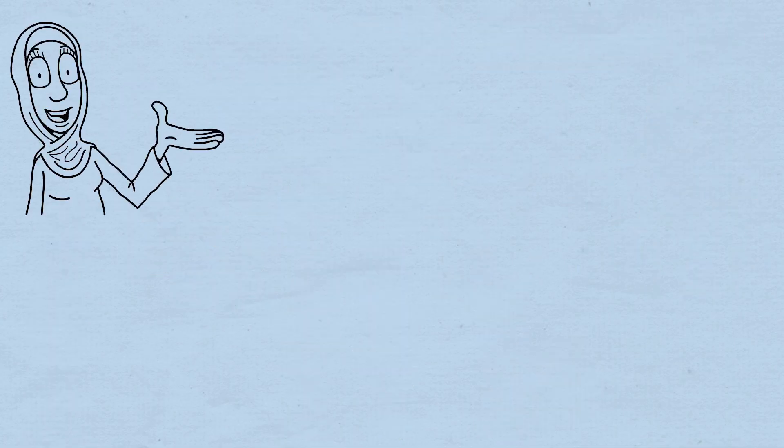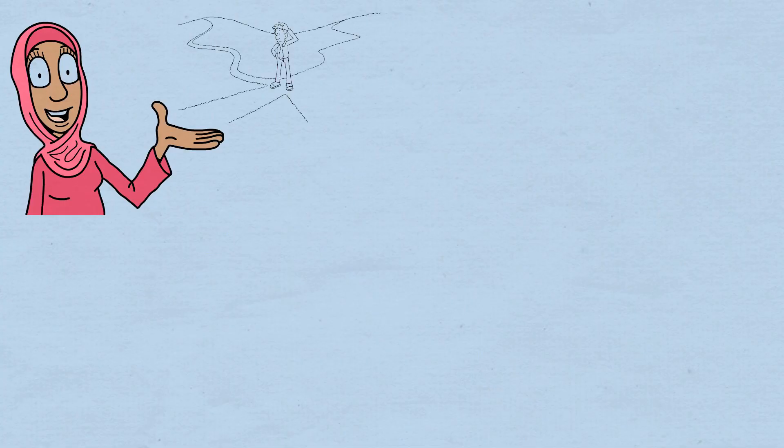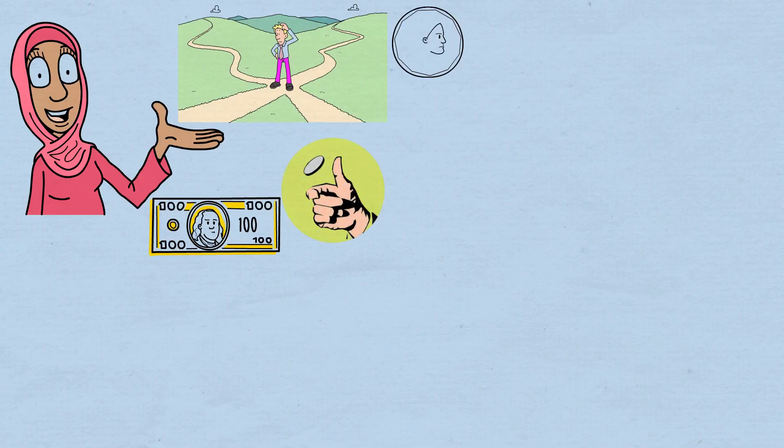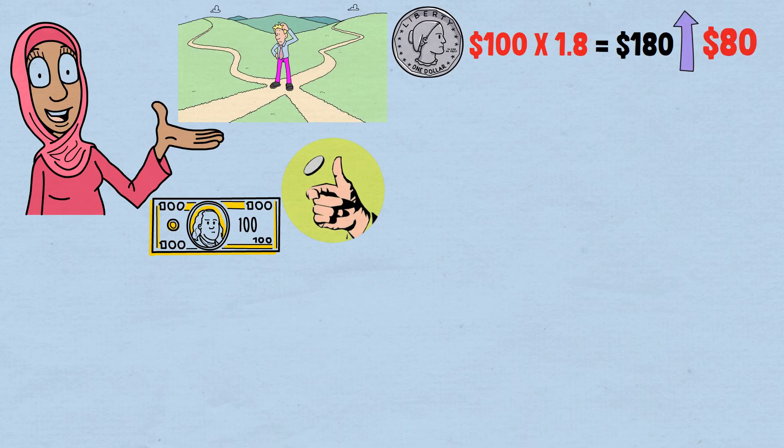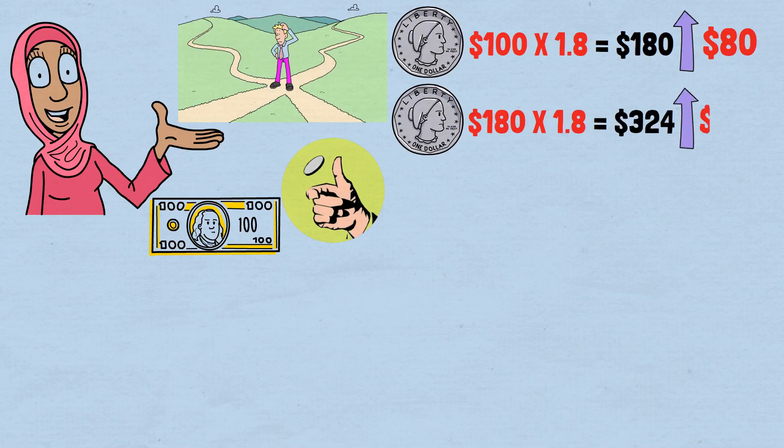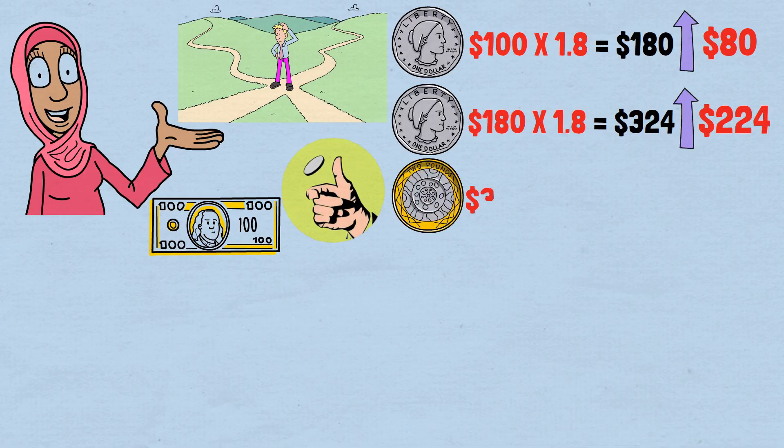To understand this paradox, we need to trace the path of destruction step by step. Let's start with our $100 and see what happens with just a few flips. Flip heads. $100 times 1.8 equals $180. We're up $80. Flip heads again. 180 times 1.8 equals $324. We're up $224. But then flip tails. $324 times 0.5 equals $162.